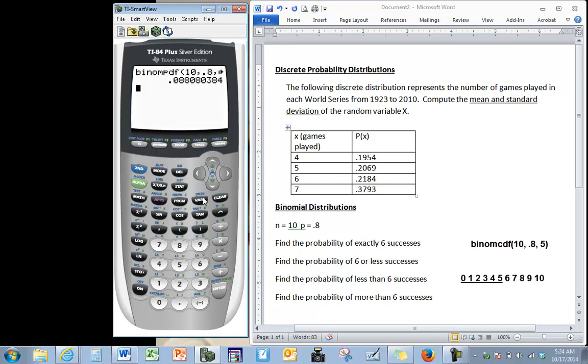We do the same thing, we go back to distributions which is right above vars. We press second and the vars button, you can scroll down or you can scroll up. This time we want binomial cdf. The c stands for cumulative.